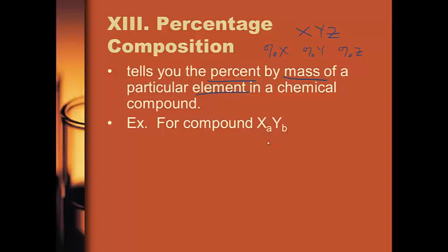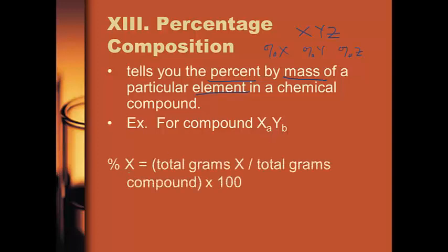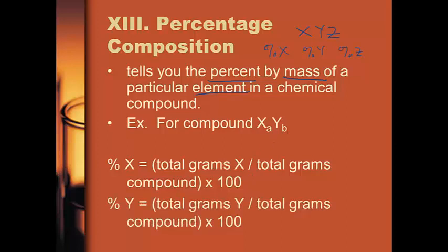For compound XₐYᵦ, the percent of X is basically the mass of X over the total mass of the compound, multiplied by 100 to get a percentage. The percent of Y is the mass of Y in your compound divided by the total mass of the compound, times 100% also. If you only have two substances, the percent X plus the percent Y must add up to 100%, so if you know one of them, you can find the other by subtraction.